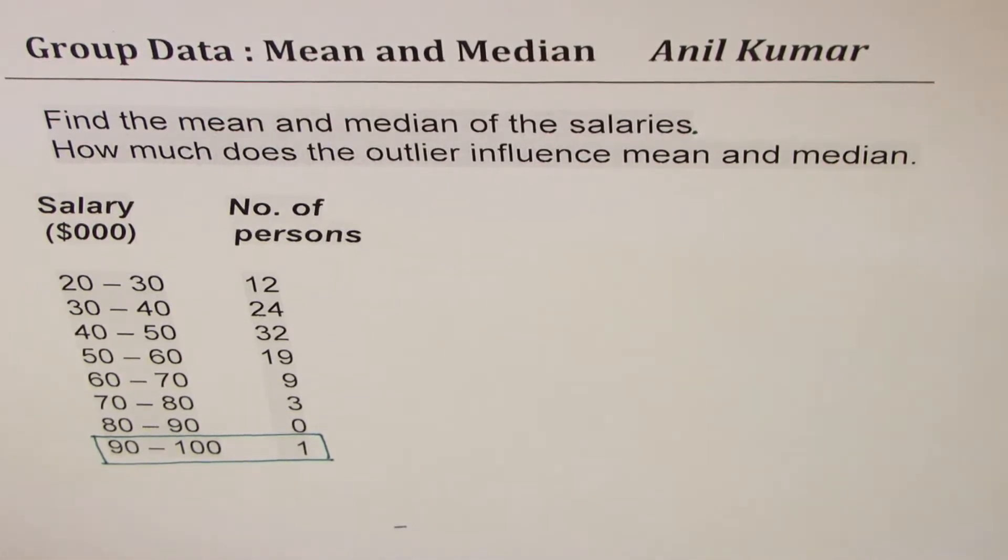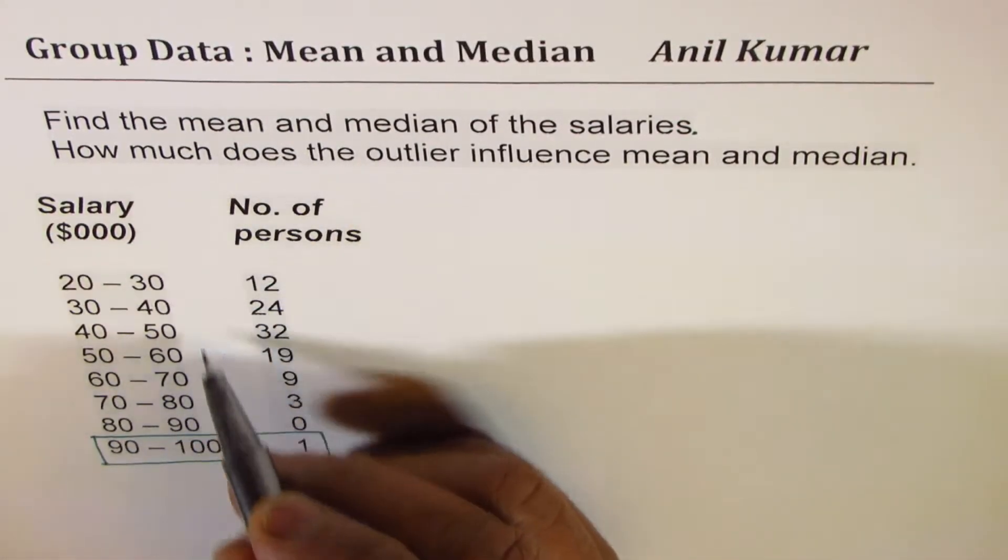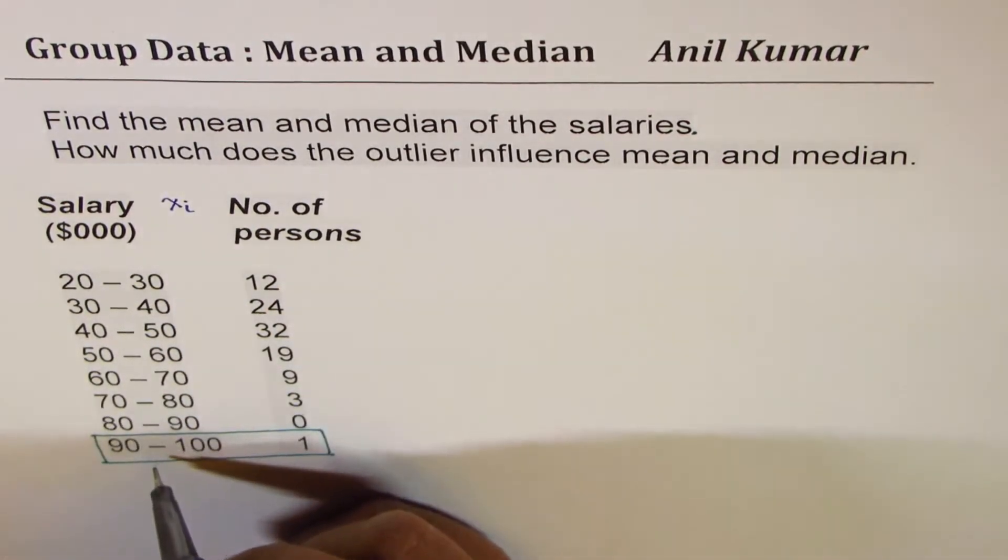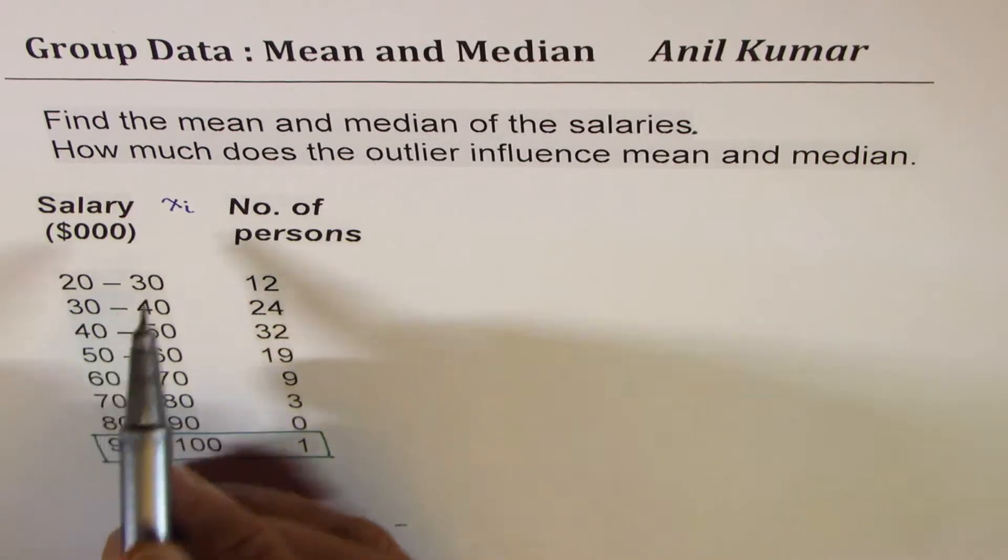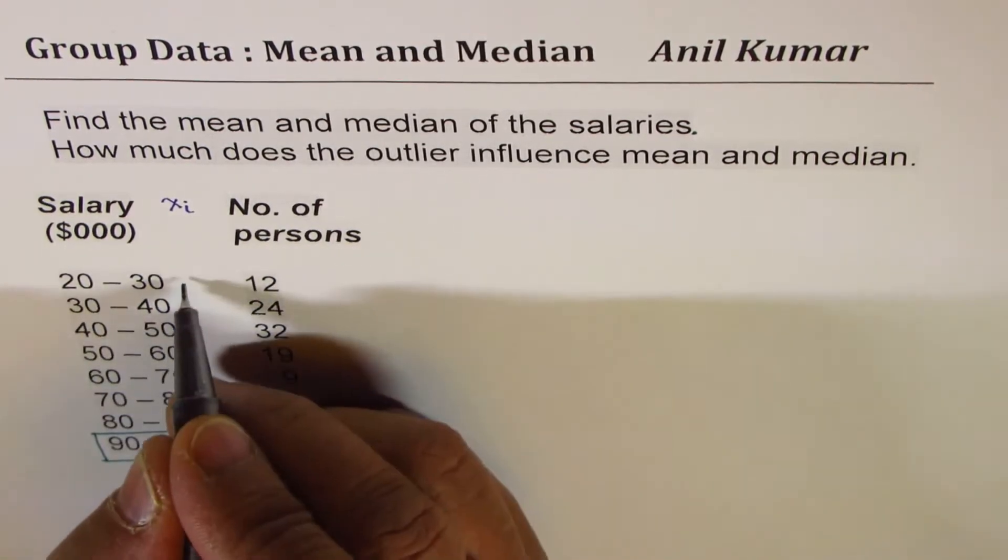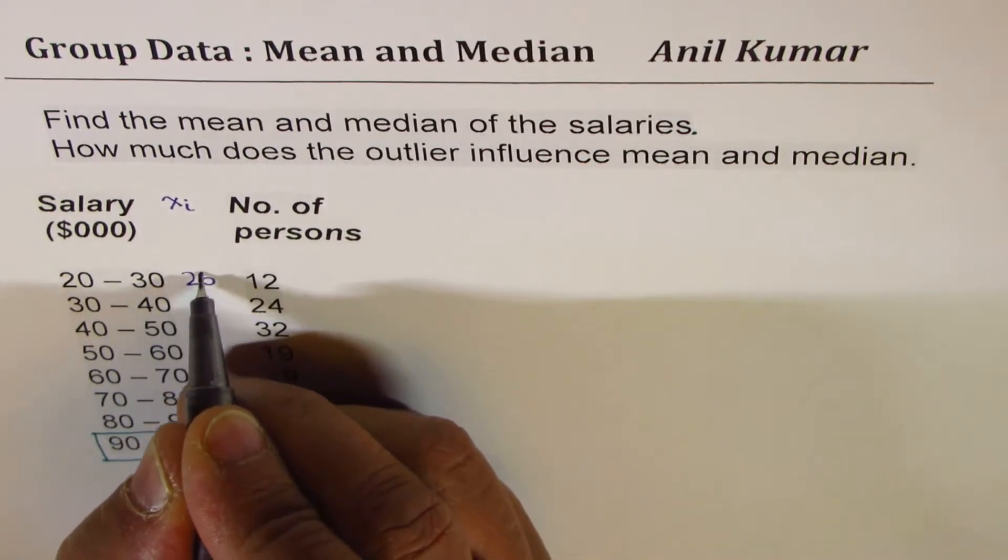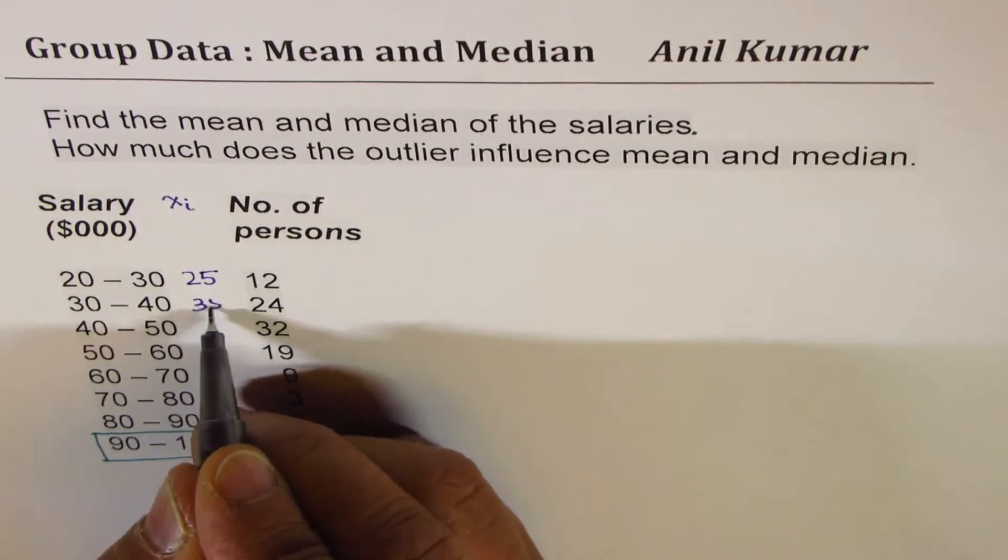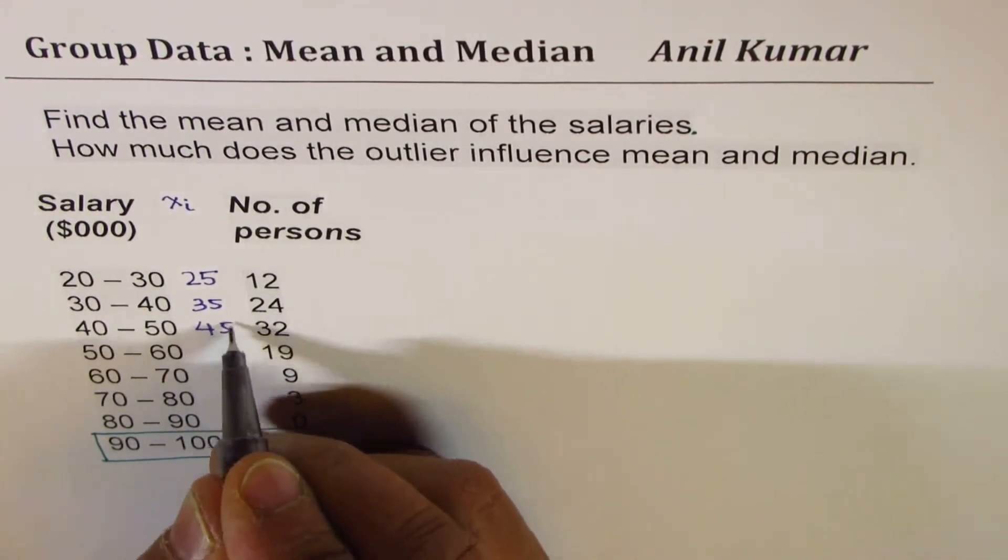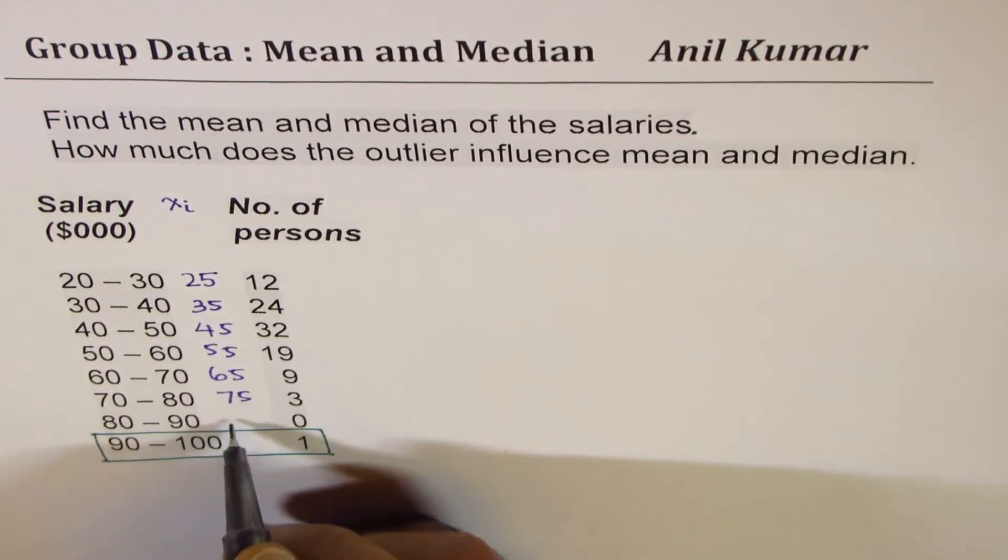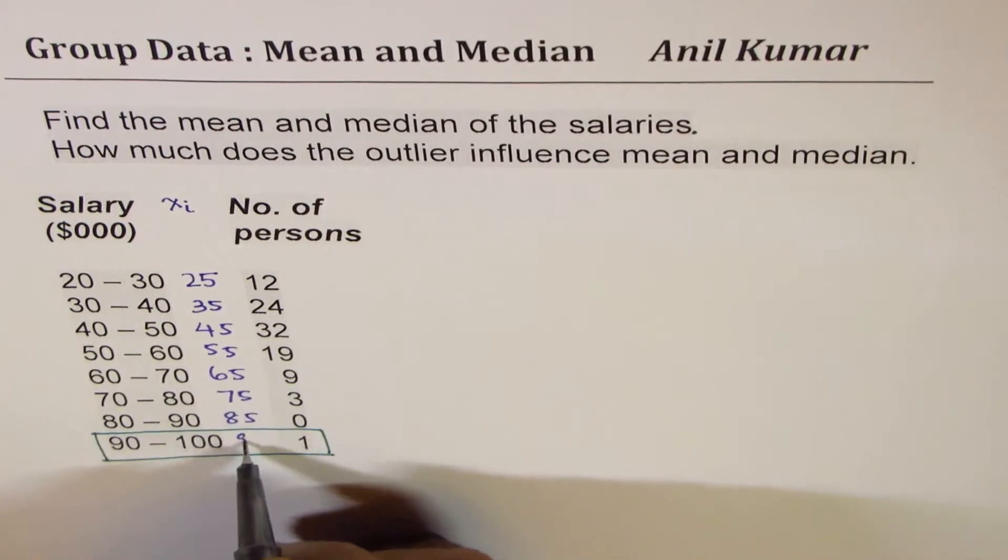So let's find the mean first. To find mean, we have to find the middle of these class interval values, add them and divide by 2. 20 plus 30 is 50 divided by 2 is 25. Similarly for others, we can just add 10 since the class interval is 10 and get the rest of the values up to 95.